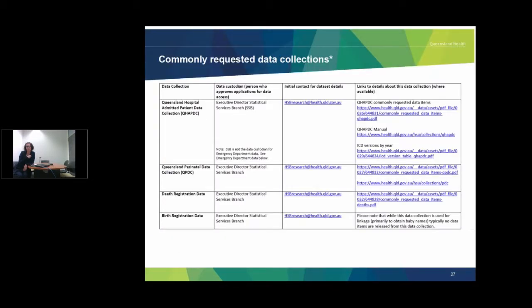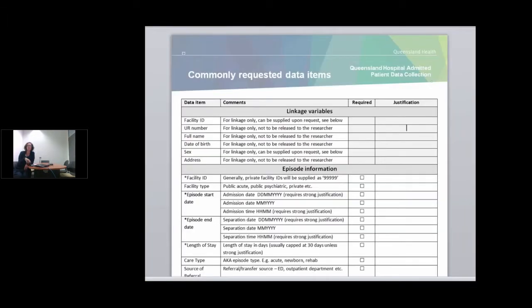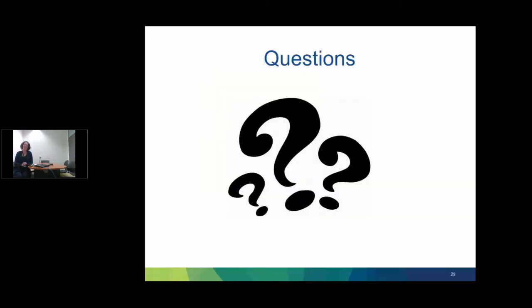The Queensland Health website for data linkage has lots of resources to help people understand how to apply for linked data or linkage services. There's a table listing all commonly requested data collections with contacts for applying and resources including manuals and forms relating to each data collection, giving scope and coverage information. For example, for the admitted patient data collection, a form covers the commonly requested data items and information about them. Those forms are all available on our website. Thank you very much, and please let me know if you have any questions.